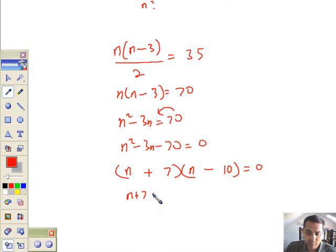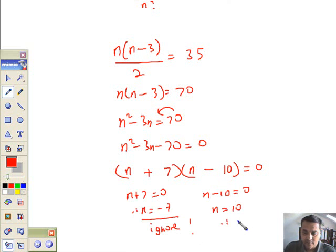I've got n plus 7 is zero. Therefore, the number of sides is minus 7. You have to ignore this one because you can't have a negative number of sides. Here I have n minus 10 equals 0, from which n equals 10. Therefore, 10 sides, and that makes the shape a decagon. It doesn't ask you to name it, but there it is. Not very difficult to solve that problem. We've done quadratics before. That's question 10 done.